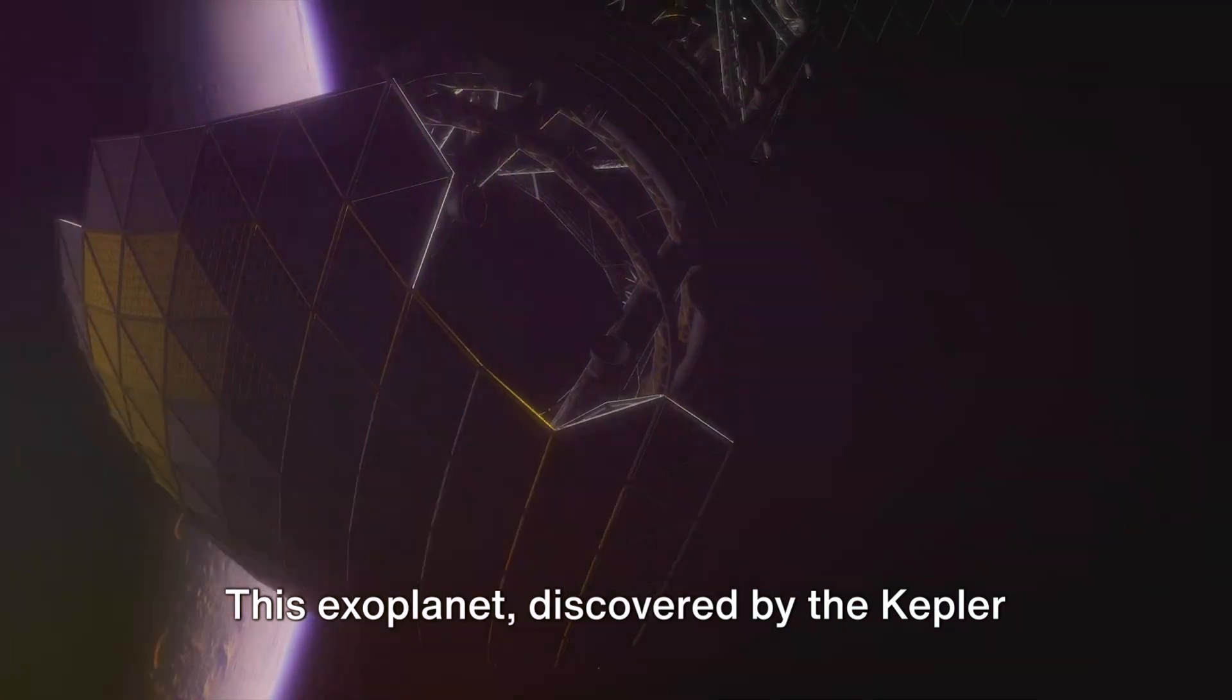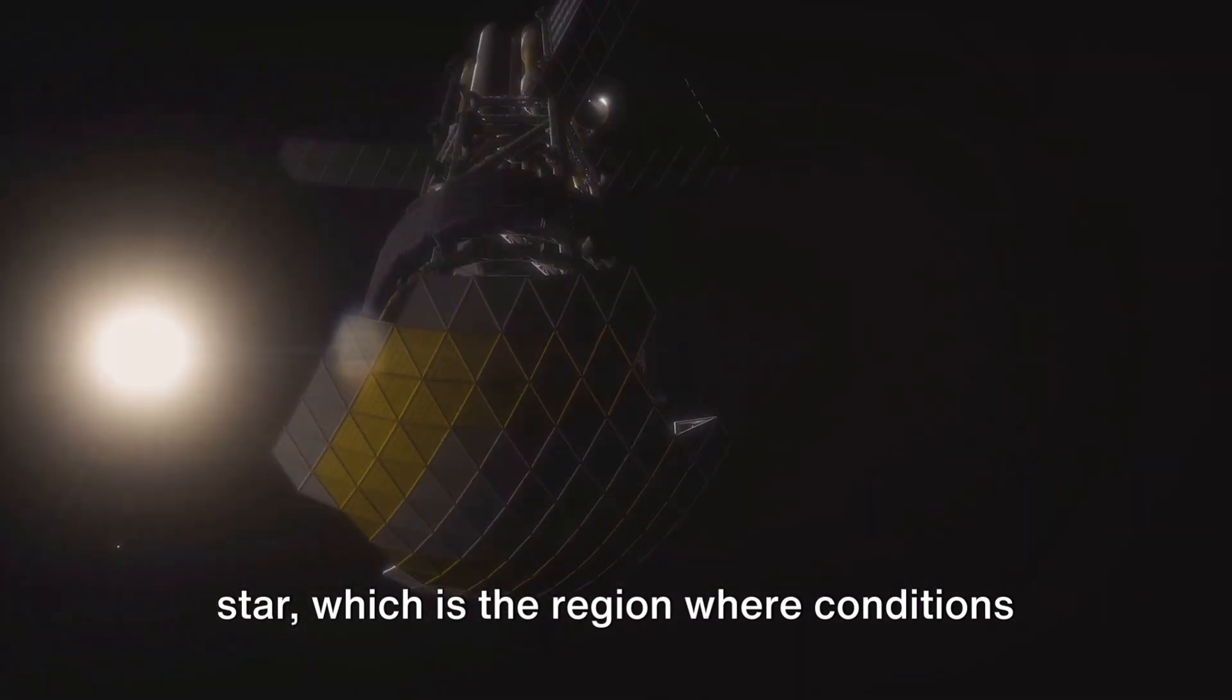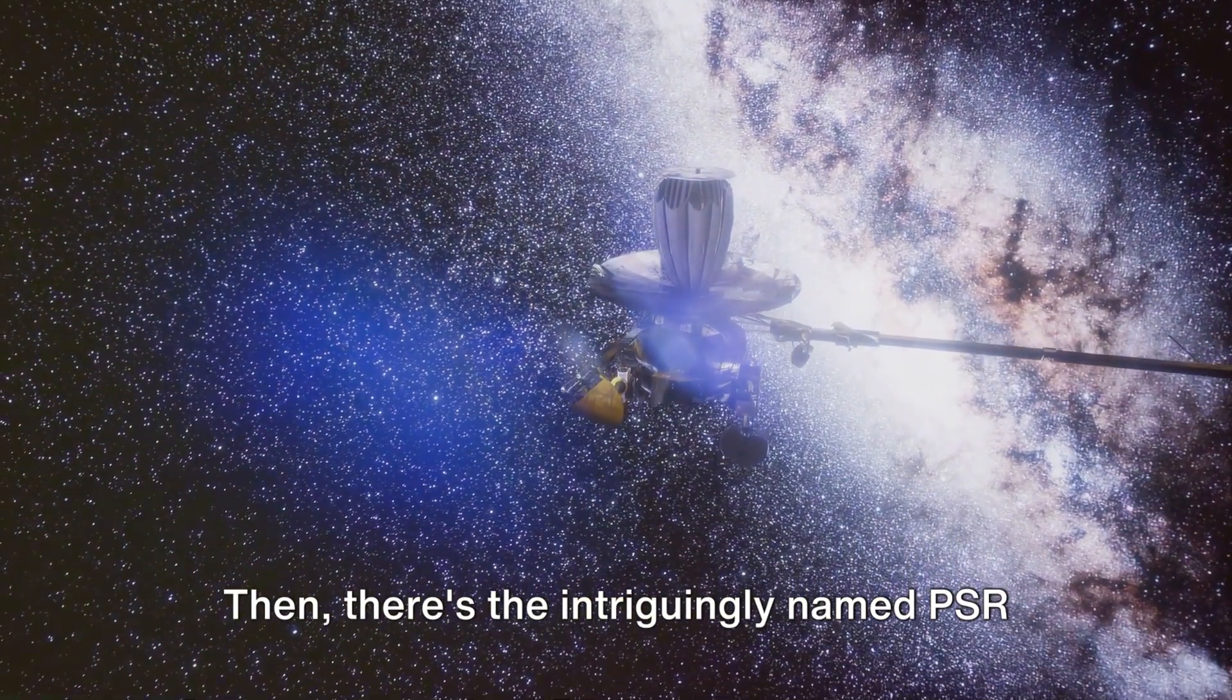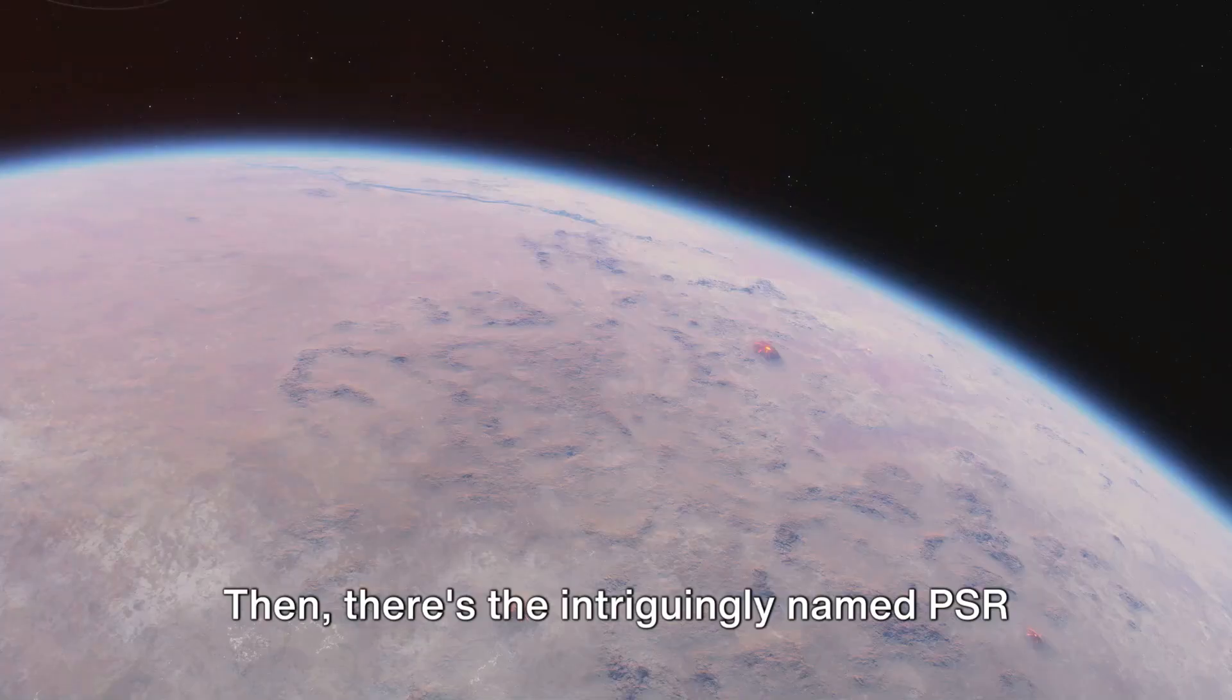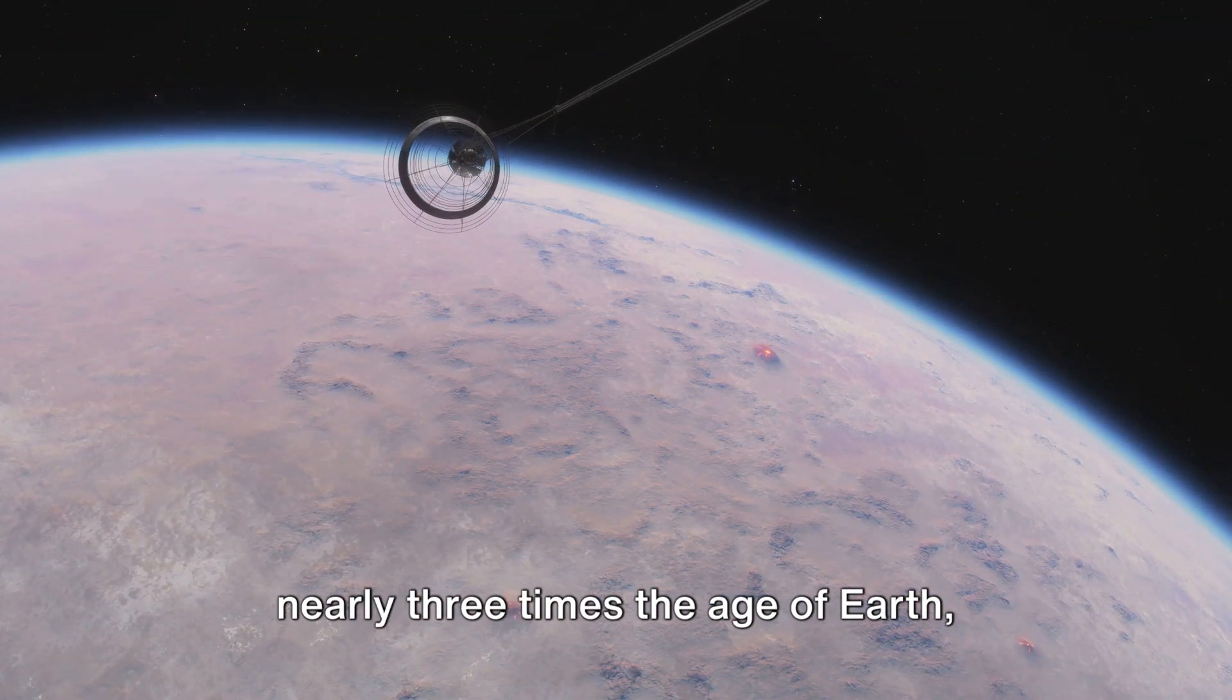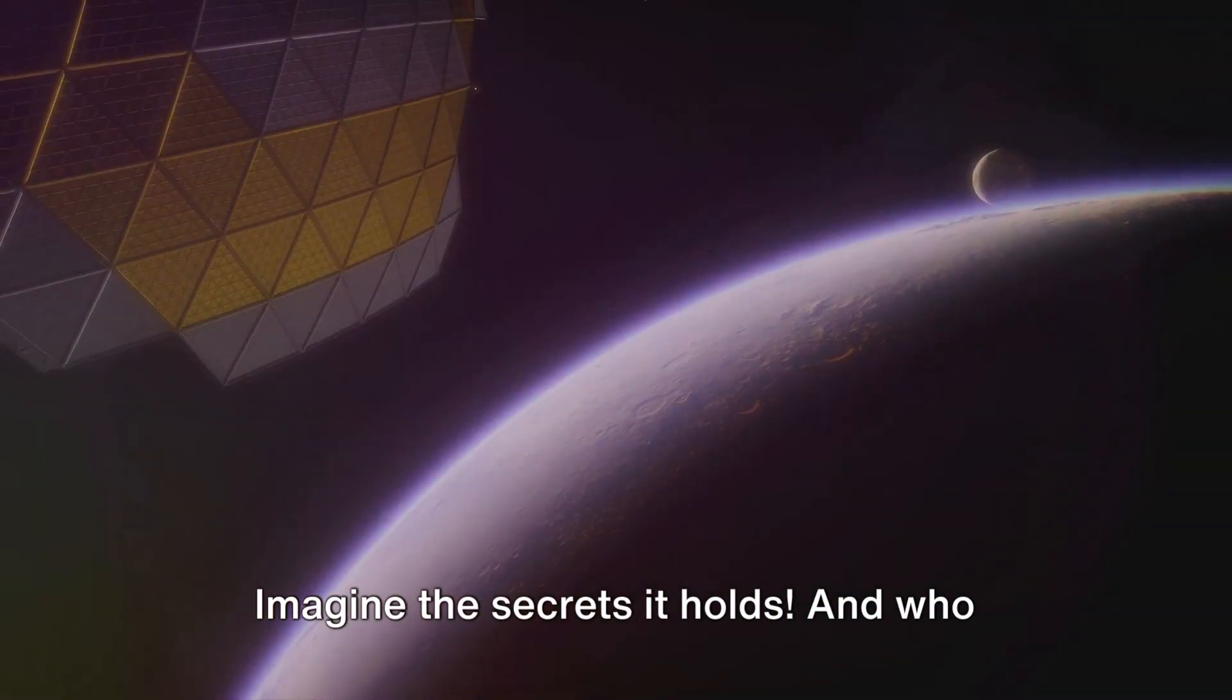This exoplanet, discovered by the Kepler Space Telescope, is the first Earth-sized planet found in the habitable zone of its star, which is the region where conditions might be just right for liquid water, a key ingredient for life as we know it. Then, there's the intriguingly named PSR B1620-26b, also known as Methuselah. This ancient exoplanet is believed to be nearly three times the age of Earth, making it one of the oldest known planets in the Universe.